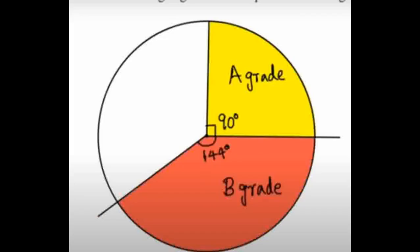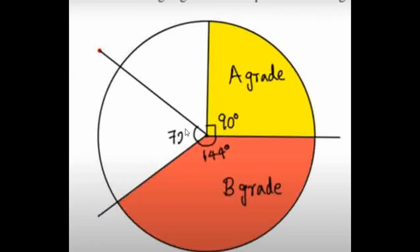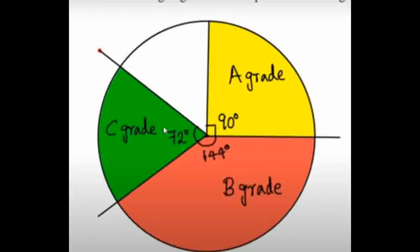Next, it's C grade, right? C grade is 20 percentage — it's 72 degrees, right? It's 72 degrees here. Okay. This is C grade, okay? Then next is D grade. It's 54 degrees, then it's D grade. Okay.